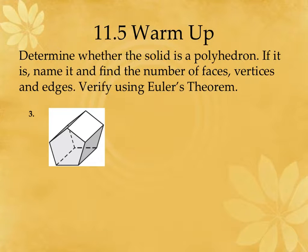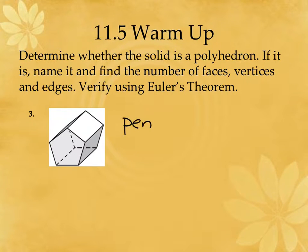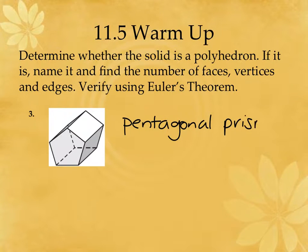Number three: determine whether it's a polyhedron, and count the faces, vertices, and edges. Is this a polyhedron? Yes. What kind is it? A pentagonal prism. Don't worry — spelling doesn't count, as long as I can figure out what it is.